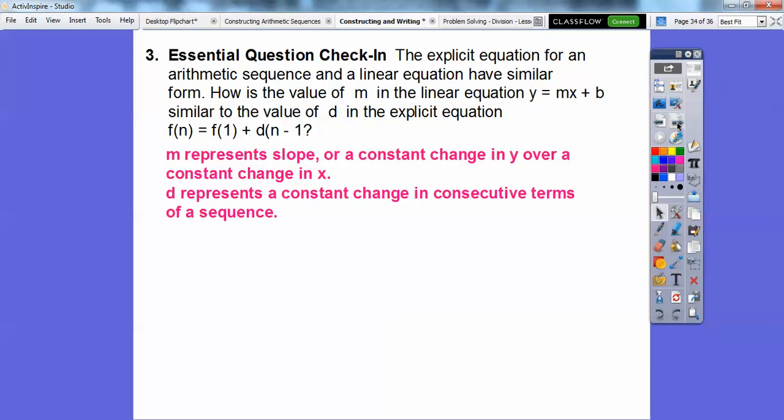m represents slope and it's a constant change. Remember the formula y sub 2 minus y sub 1 over x sub 2 minus x sub 1, that's m. So it's the constant change in y over the constant change in x. But d represents a constant change in just the consecutive terms of a sequence. There is no graph or a slope of a line, they're just numbers in a sequence.